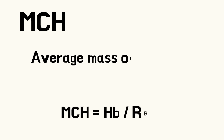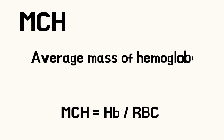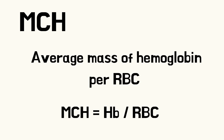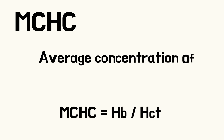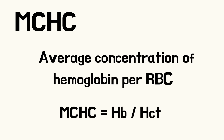MCH refers to the average mass of hemoglobin in each RBC, which is equivalent to the hemoglobin divided by the RBC count. MCHC refers to the average concentration of hemoglobin per RBC, which is equivalent to the hemoglobin divided by the hematocrit.